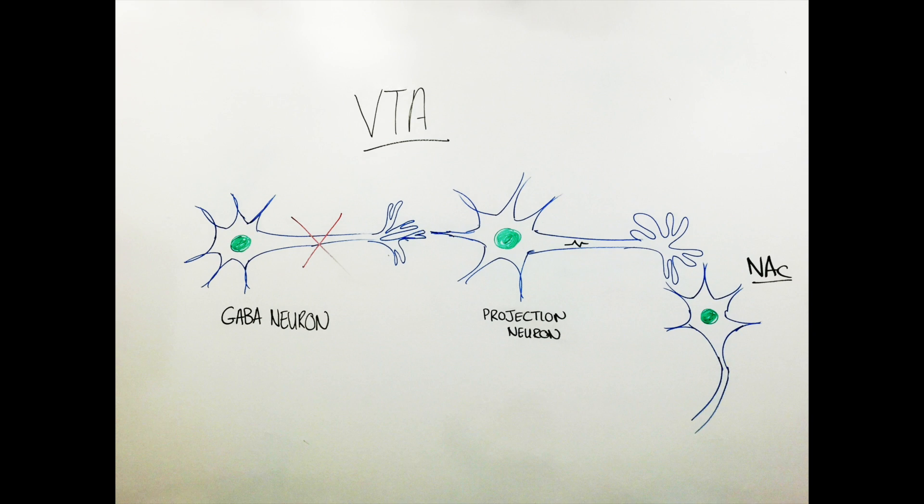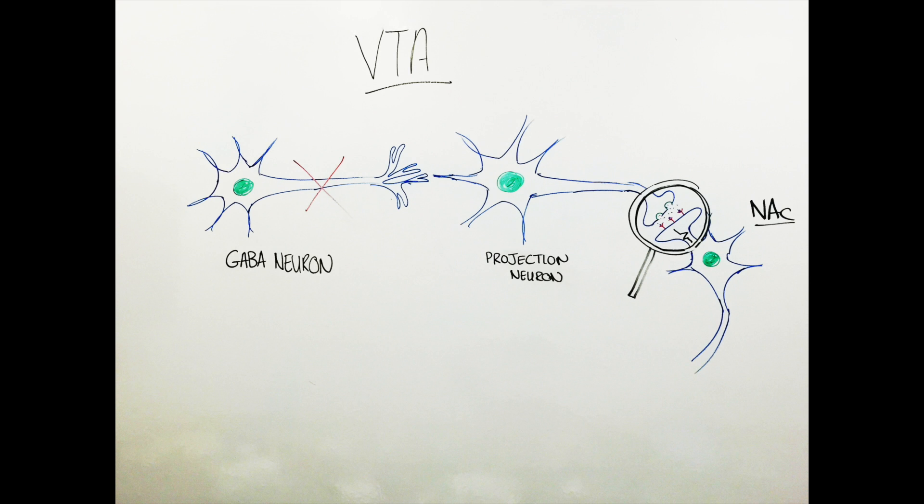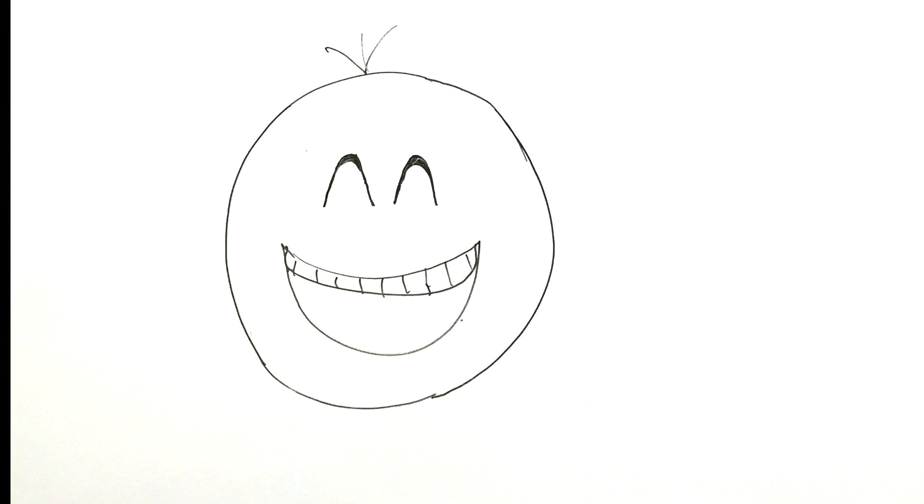The nucleus accumbens, when activated by dopamine, releases an inhibitory signal that activates a different GABA neuron in the thalamus. This causes increased activation in the thalamus, which increases your positive mood.